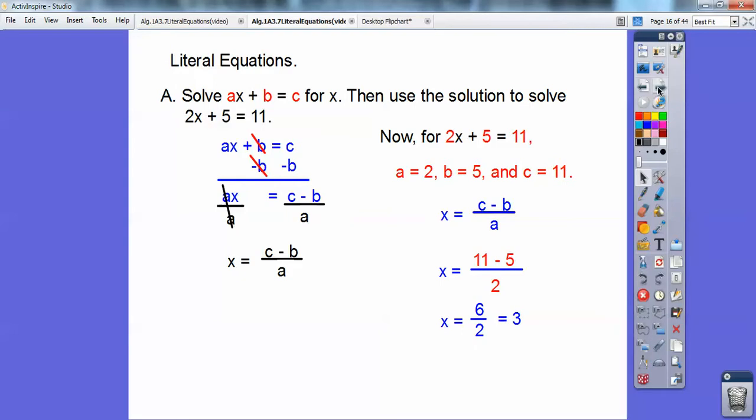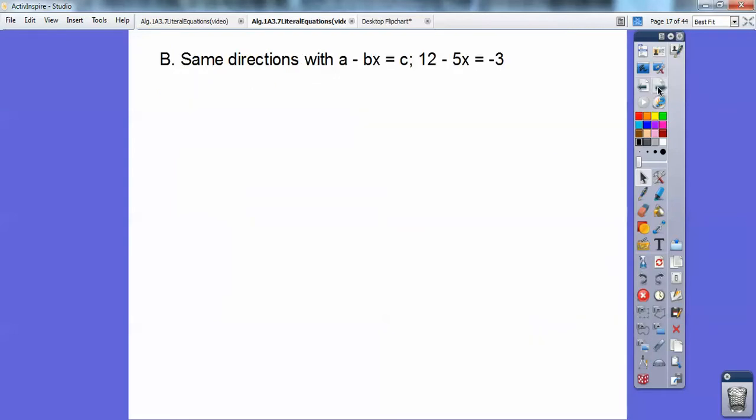Okay, let's try another one of those. Same directions. We're going to solve for x, and then when we solve for x, we're going to plug in the 12, the 5, and the 3 for the a, b, and c. Okay, we've got to watch out for that negative in front of the bx.